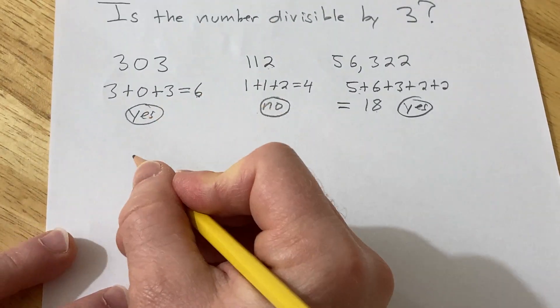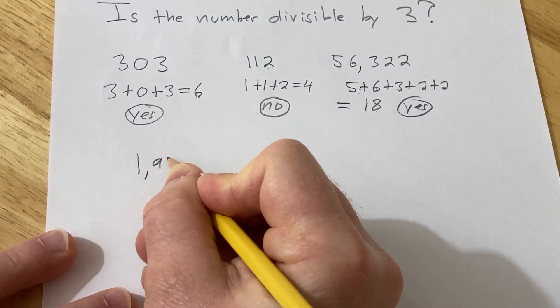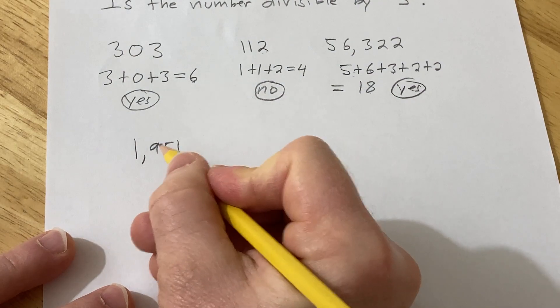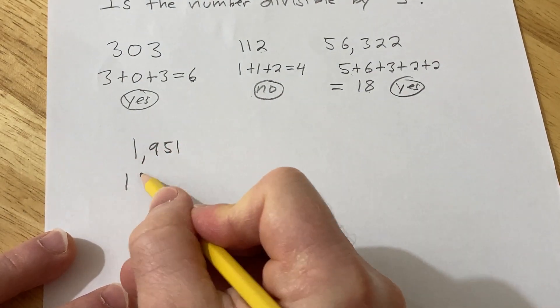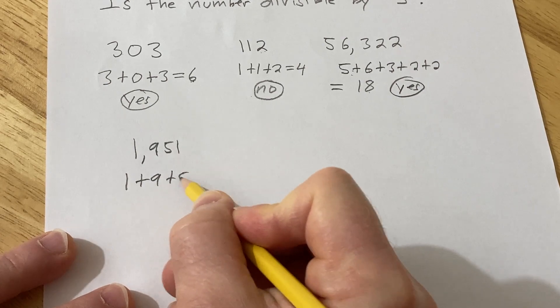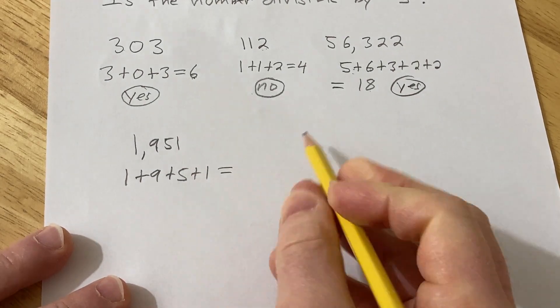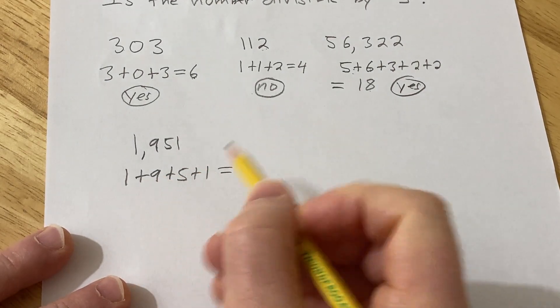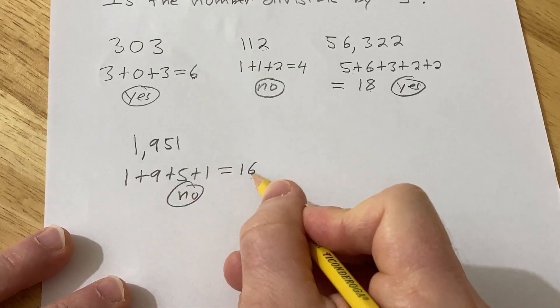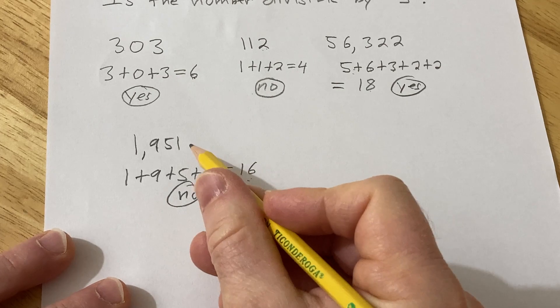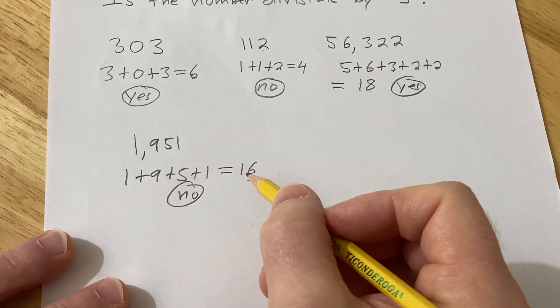Let's do another example. How about this one? 1,951. So is this divisible by 3? So all we do is we add up the digits. 1 plus 9 plus 5 plus 1. So that's equal to 10 plus 6. That's 16. Hmm, nope. So in this case, 16 is not divisible by 3. So this number is also not divisible by 3.